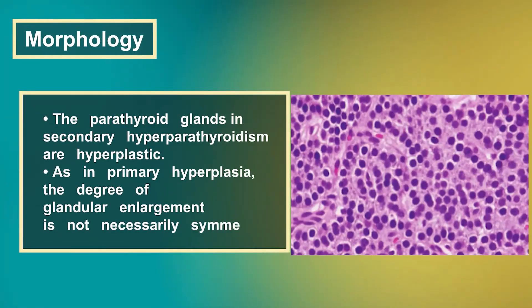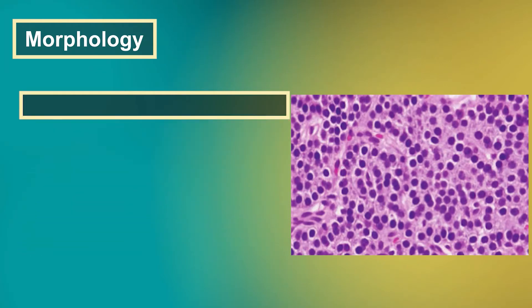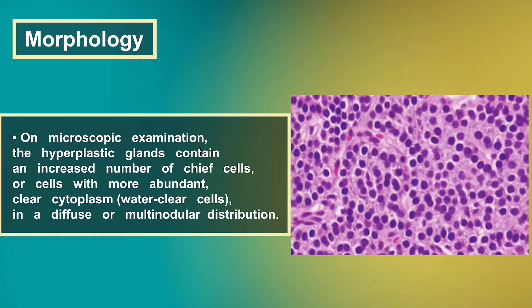The parathyroid glands in secondary hyperparathyroidism are hyperplastic. As in primary hyperplasia, the degree of glandular enlargement is not necessarily symmetric. On microscopic examination, the hyperplastic glands contain an increased number of chief cells or cells with more abundant clear cytoplasm — water clear cells — in a diffuse or multinodular distribution.